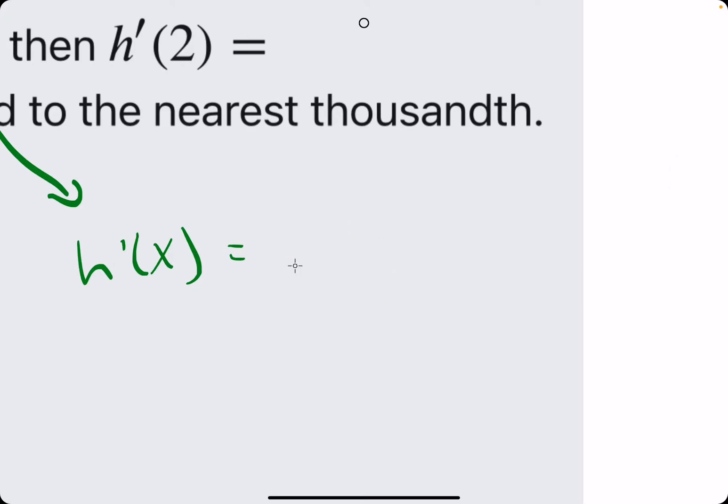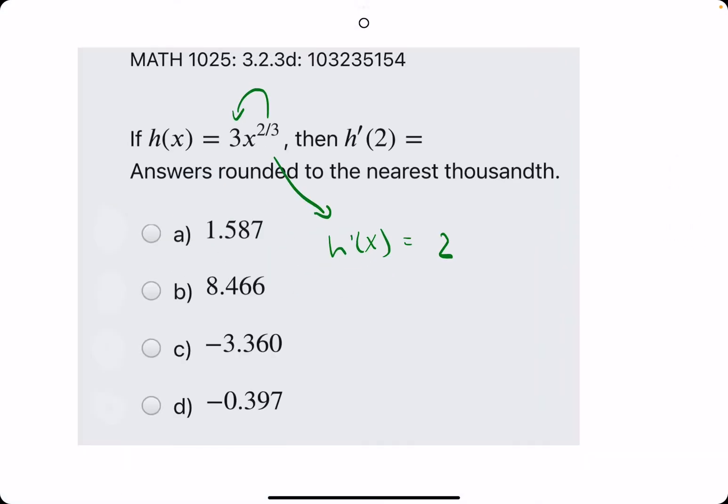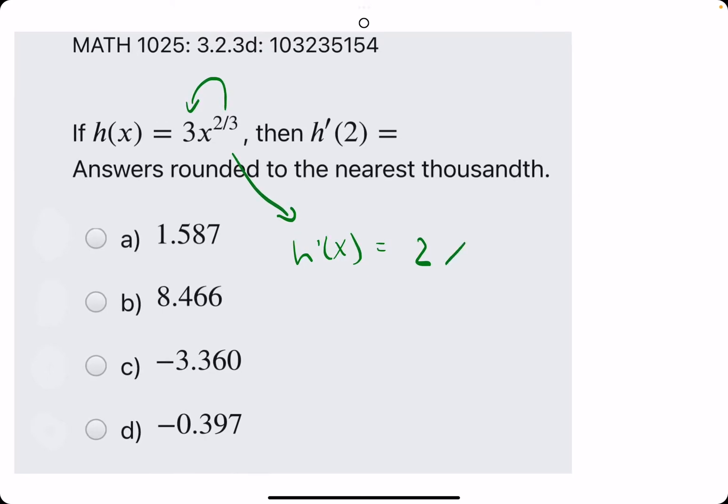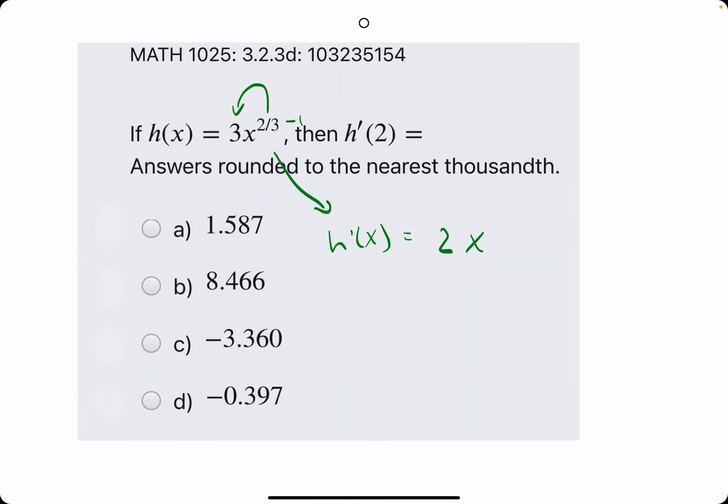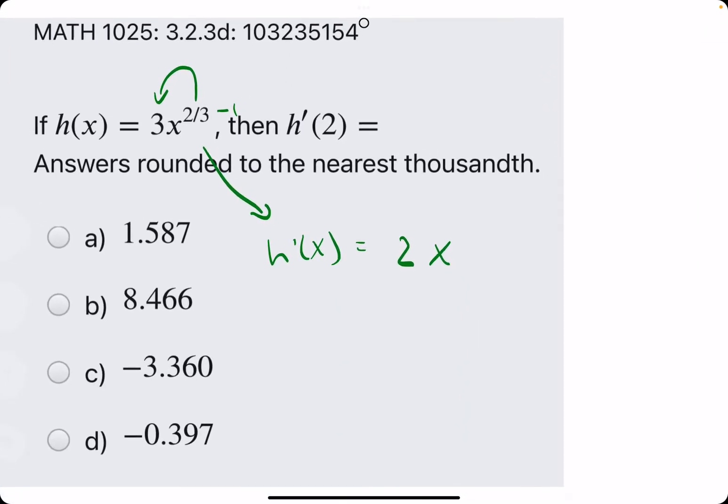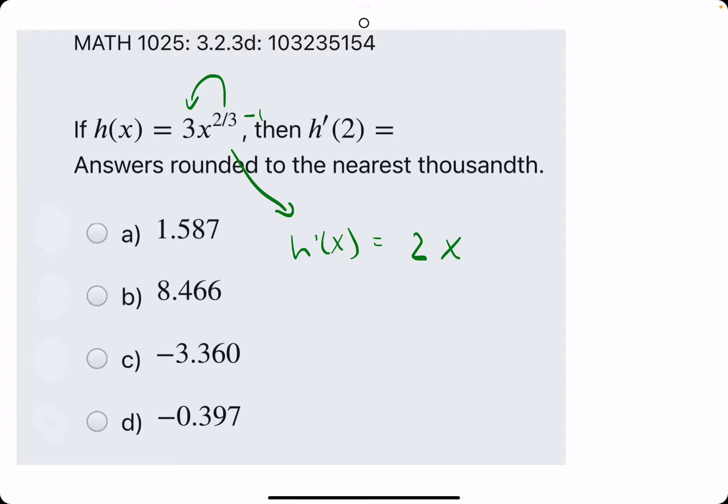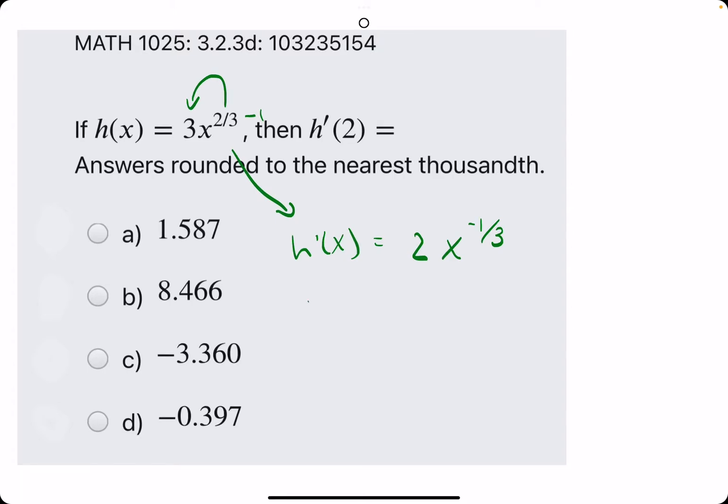And we're really just left with 2/1, which is just 2. We leave the x and then we subtract the exponent by 1. So our trick is doing top minus bottom. So 2 minus 3, negative 1. And we leave that over the original denominator. So 2x to the negative 1/3 is our derivative.